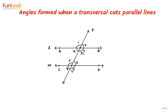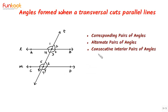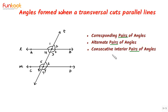We will take one angle from intersection point X and one angle from intersection point Y to form pairs of angles. Based on their common properties, pairs of angles are named as corresponding pairs of angles, alternate pairs of angles, and consecutive interior pairs of angles. Note that pairs is plural, meaning you will have more than one pair of corresponding, alternate, and consecutive interior angles.